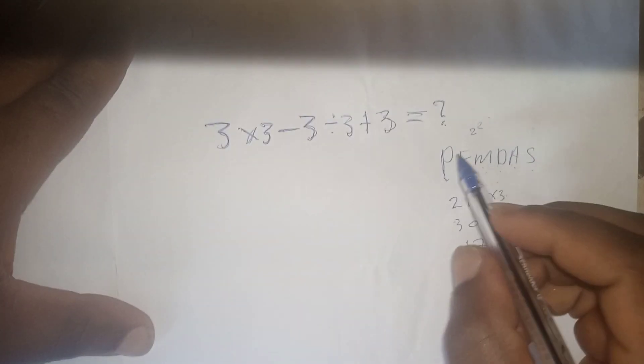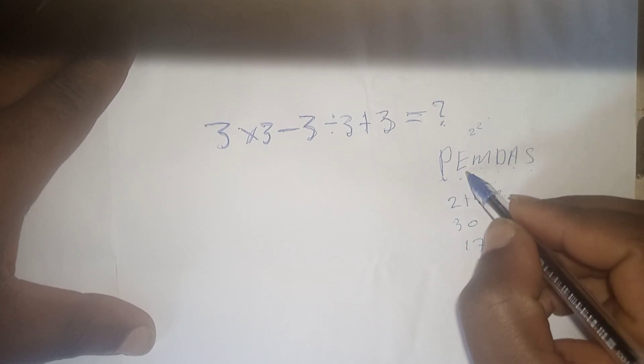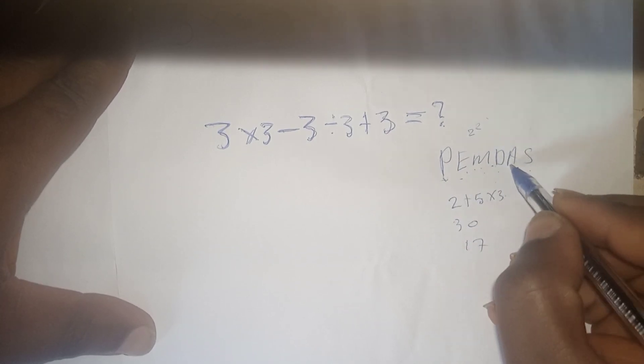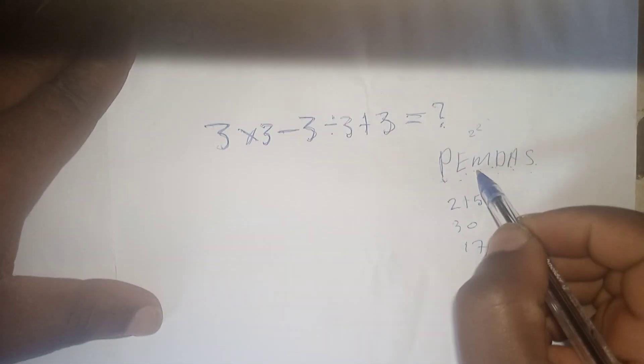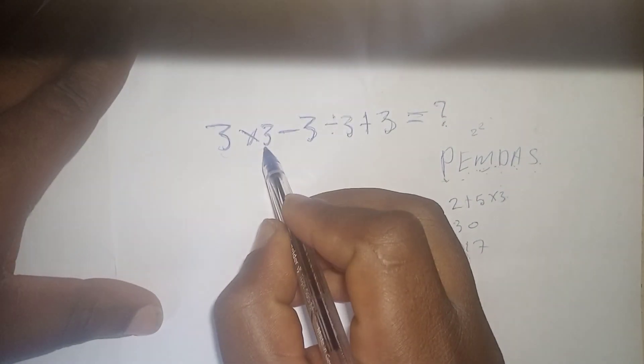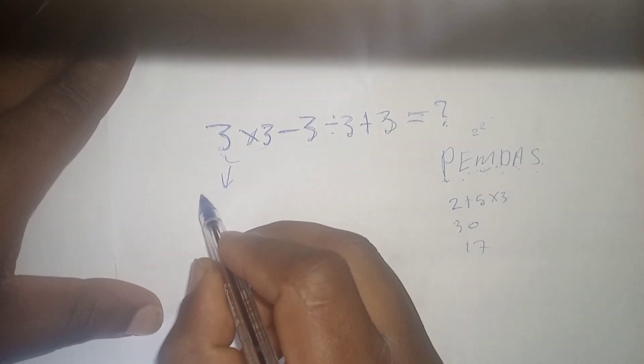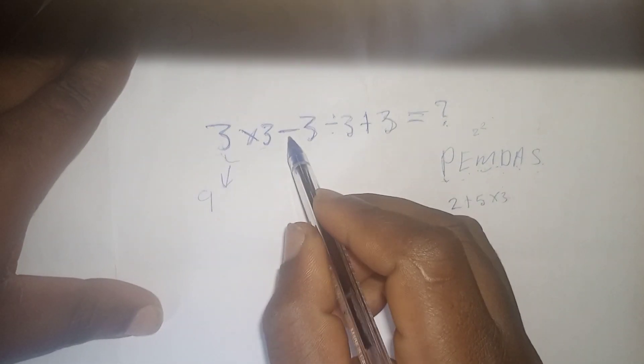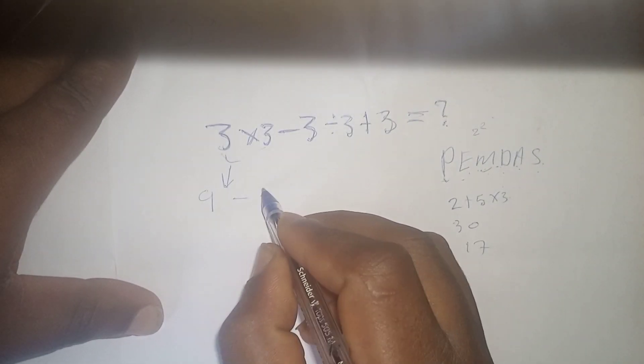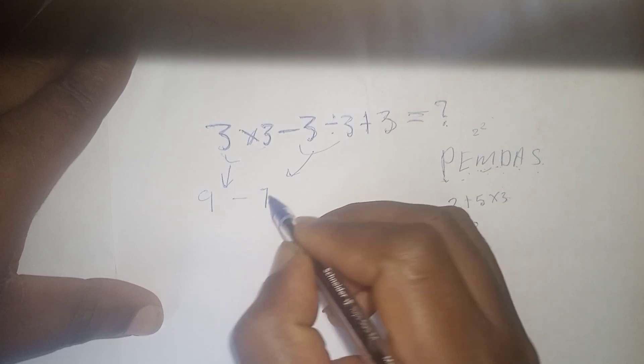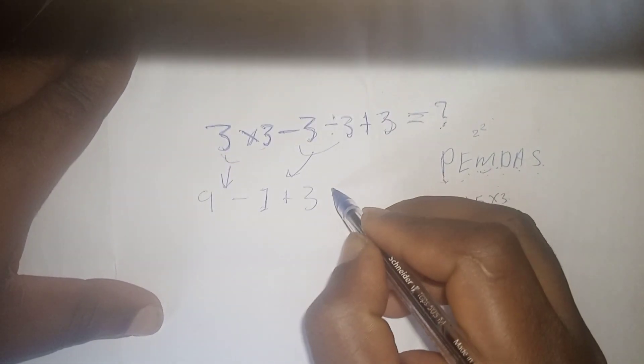we see in this quiz there is no parenthesis, there is no exponent. There is multiplication, there is division, there is addition, and there is subtraction. So we will do multiplication first. This 3 times 3 will give us 9. And negative 3 divided by 3 will give us negative 1. And we plus this 3 equals.